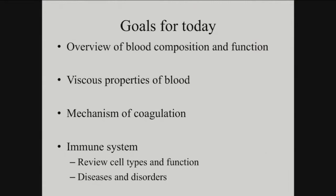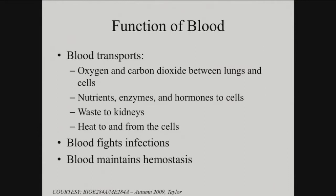First, the function of blood — hopefully this is a review for most of you. It is the exchange of oxygen and carbon dioxide. It transports nutrients to cells and transports waste from cells to the kidneys. It's also a source of heat; your blood circulation is one reason why you're warm-blooded and keeps you at a stable temperature. Blood also fights infections and maintains homeostasis, and you have an immune system to fight those infections.